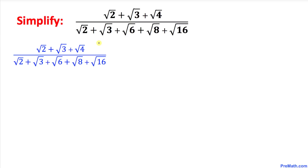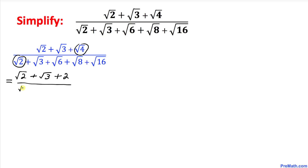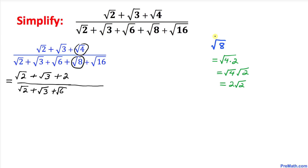Let's get started with the solution. In the numerator, square root of 2 stays as is, plus square root of 3, and square root of 4 is simply 2. In the denominator, square root of 2 and square root of 3 stay the same, then square root of 6, and square root of 8 — since 8 = 4 × 2 — becomes 2√2. Square root of 16 is simply 4.